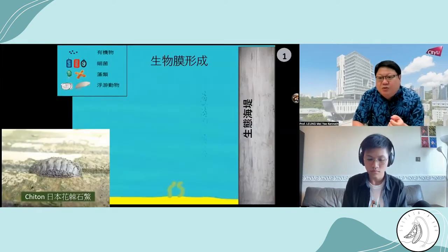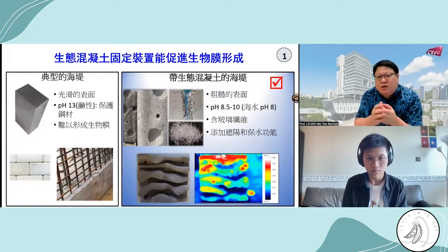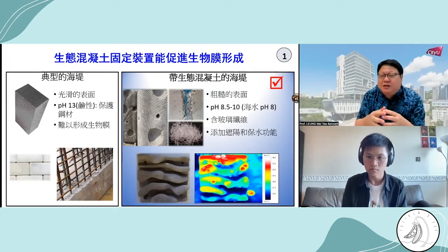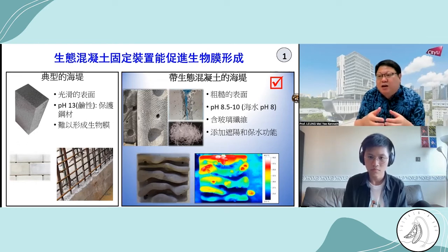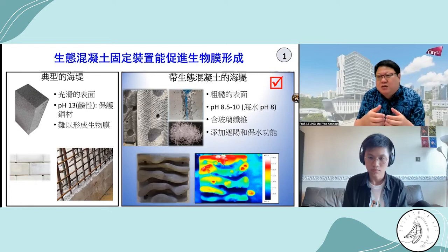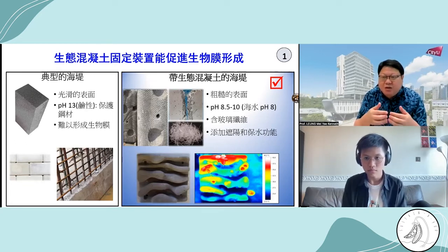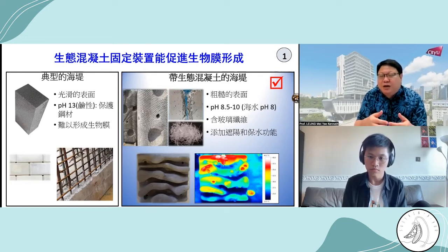Conventionally, we use concrete to make the structure. We put some metal bar — rebar — inside as reinforcement. We use concrete with high pH between 12 to 13, making it alkaline to protect the rebar from corrosion. However, the pH in seawater is only around 8. Not many marine life will like to stay on the surface because of the high pH. So the first thing we have to modify is the surface pH, to lower it closer to 8.